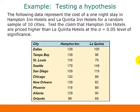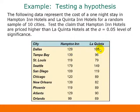Here's an example. The data represent the cost of a one-night stay at Hampton Inn and La Quinta Inn hotels for a random sample of 10 cities. We test the claim that Hampton Inn hotels are priced higher than La Quinta hotels at the alpha equals 0.05 level. This counts as dependent samples because for each city we have a Hampton Inn price and a La Quinta price — the La Quinta selection in each city depended on having already selected a Hampton Inn in that same city.